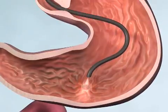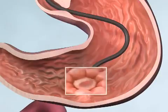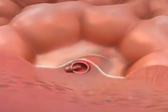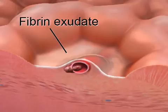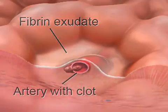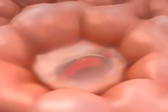The peptic ulcer, in this example, has eroded through the mucosa and submucosa into an underlying artery that produces the bleeding. The ulcer base is covered by a fibrin exudate. The non-bleeding visible vessel, composed of the artery and clot plugging the defect in the side wall of the artery, appears as a nipple-like protuberance in the ulcer base.